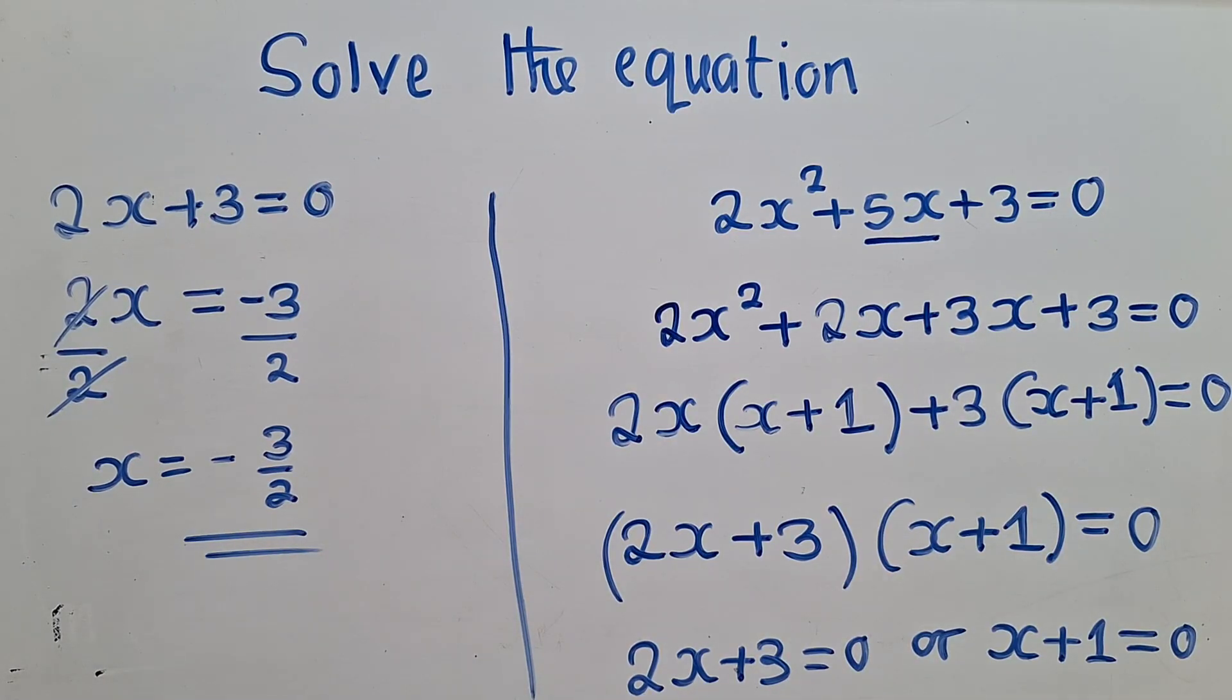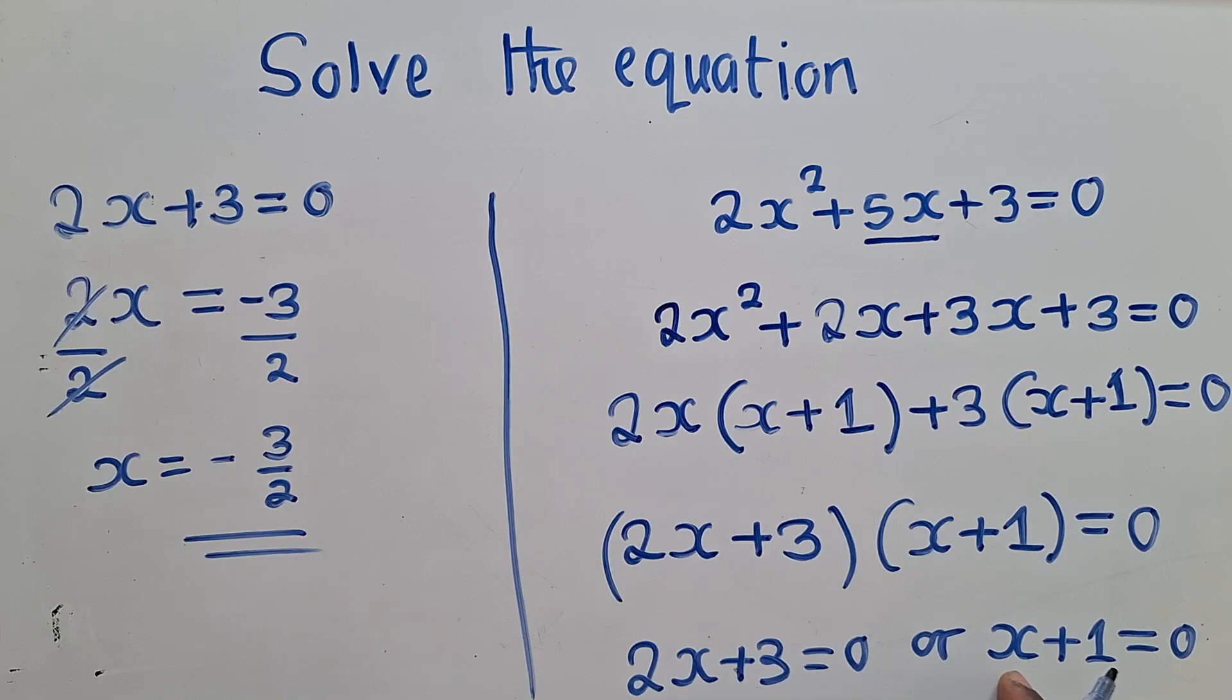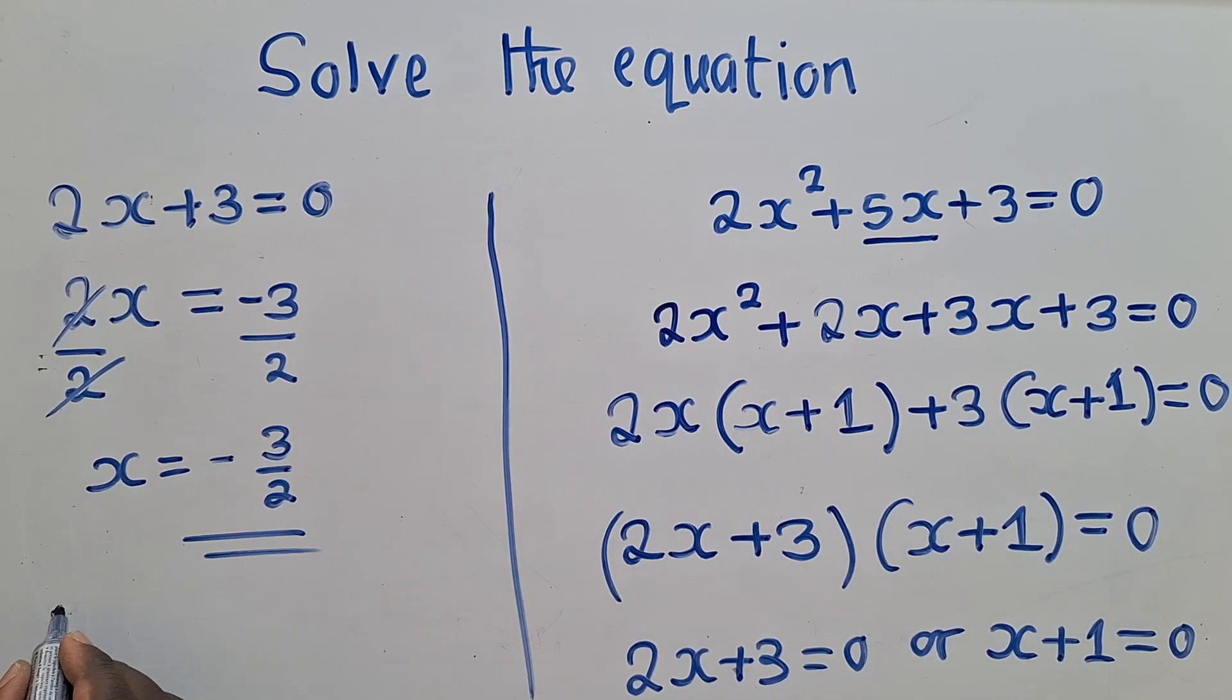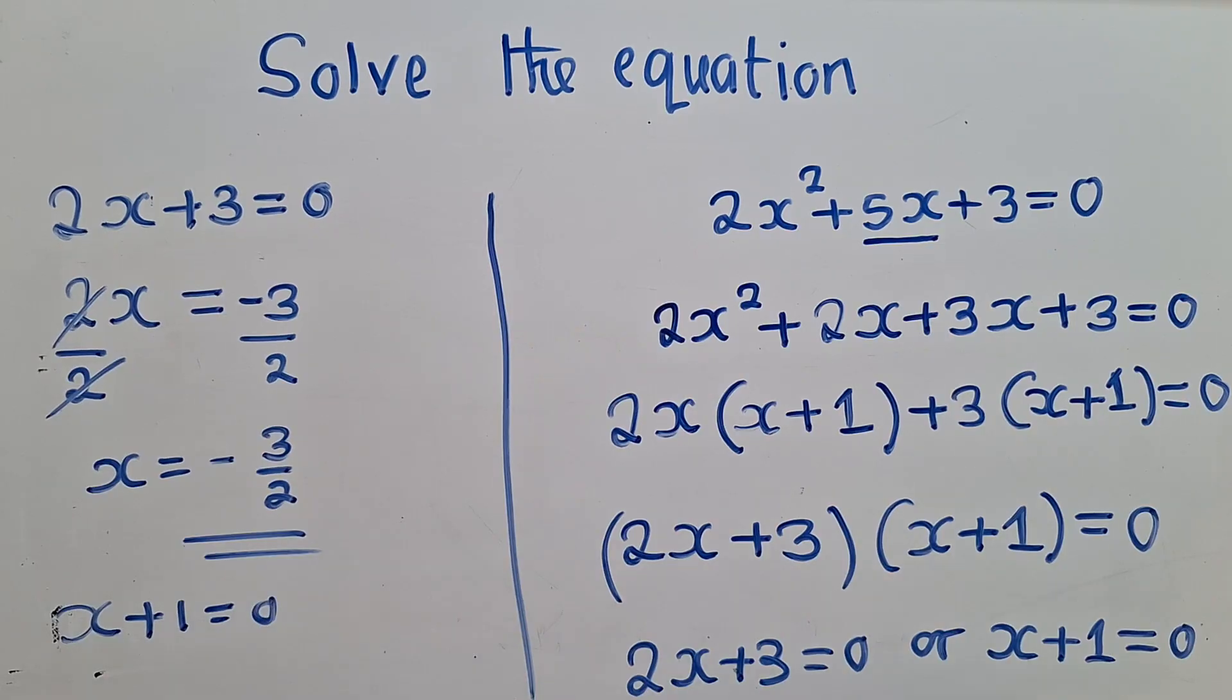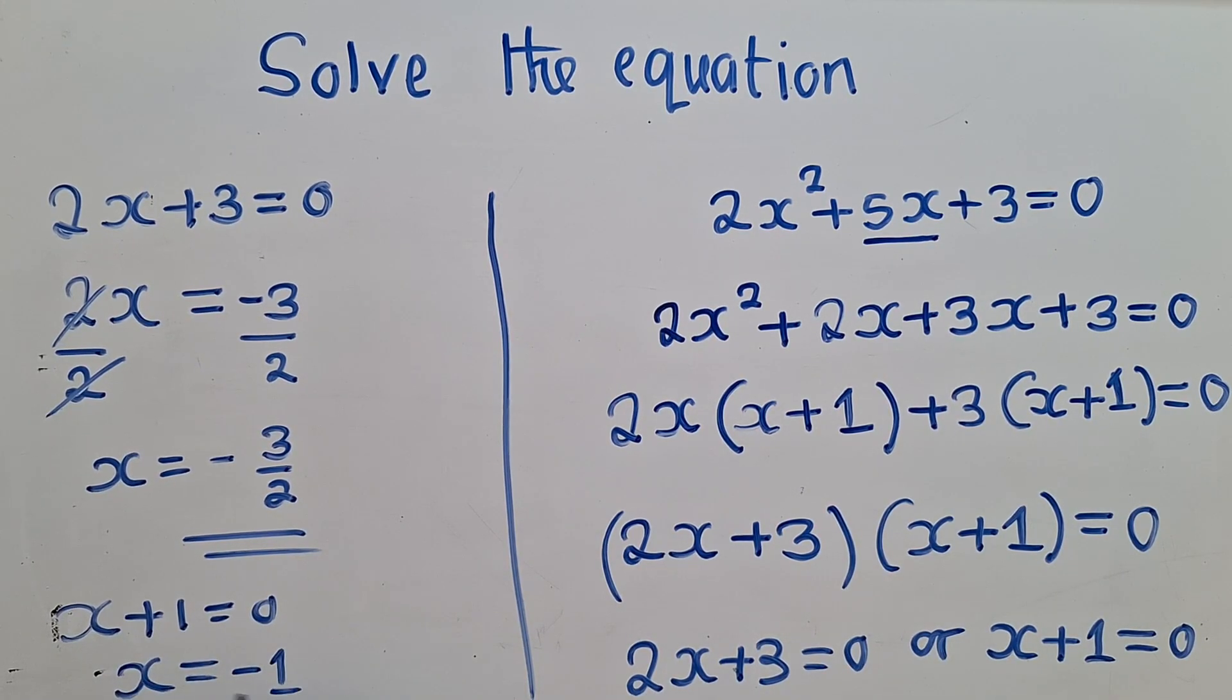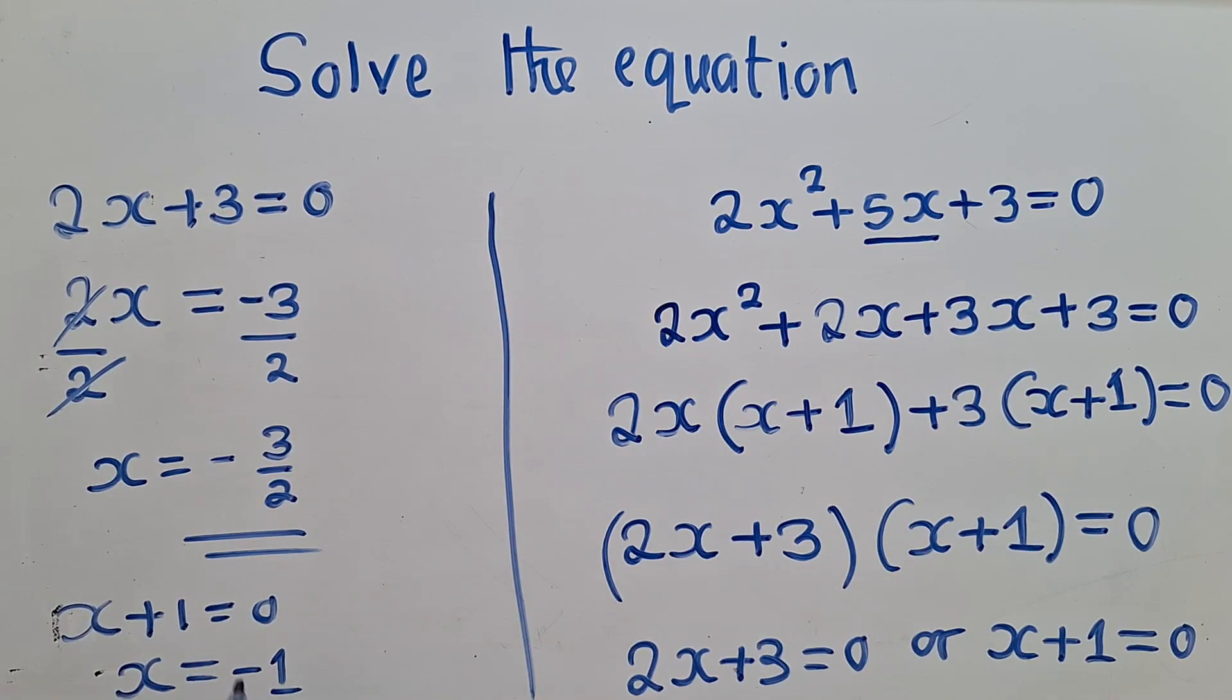For the other value of x, you get this equation. You say x plus 1 equals 0, which is this one. And then you say x equals negative 1. This one, cross the equal sign, it will be minus 1. So these are the two solutions.